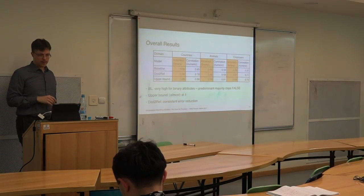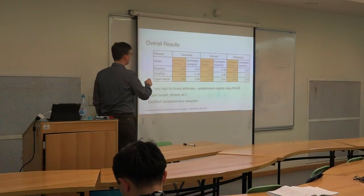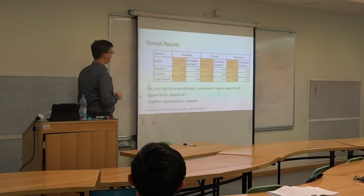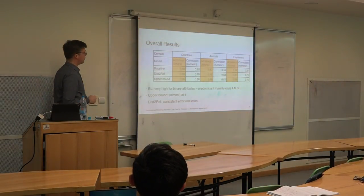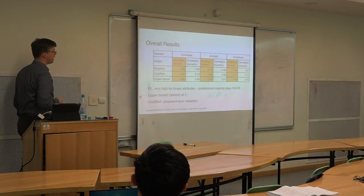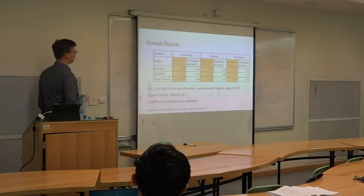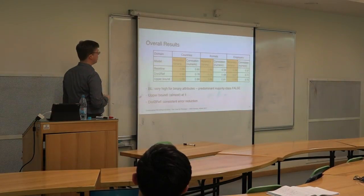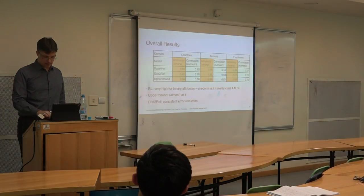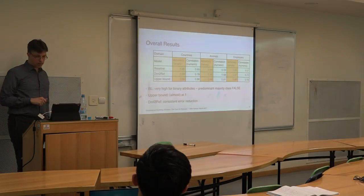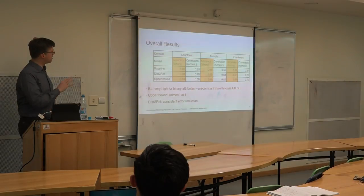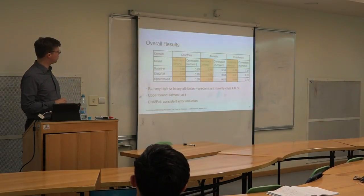If we first look at the binary attributes, you see that the baseline here is very high, in particular for employers. Because when we have categorical attributes with many values, we get lots of binary attributes, almost all of which are false. And so we have in the meantime done some work on changing the encoding of the features there, but these are the kind of stable numbers that I wanted to show.